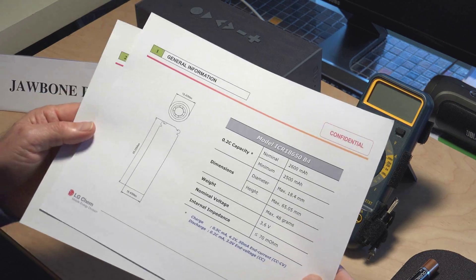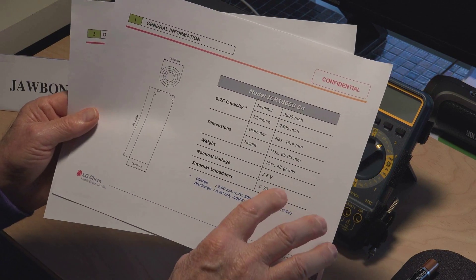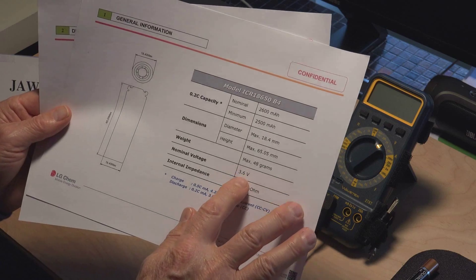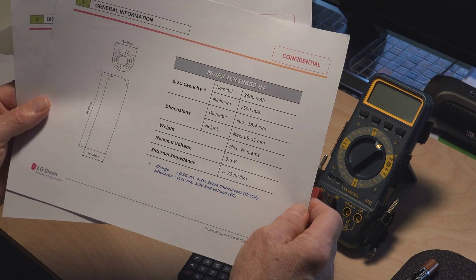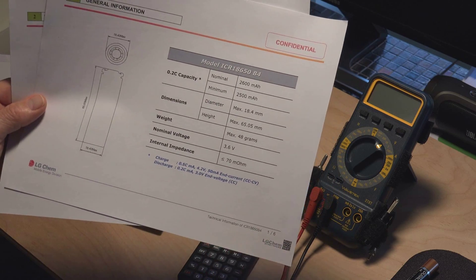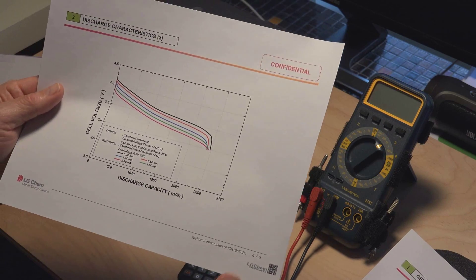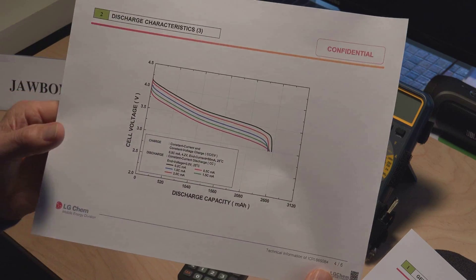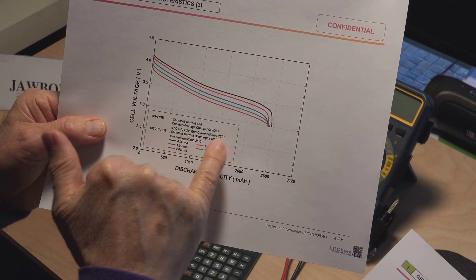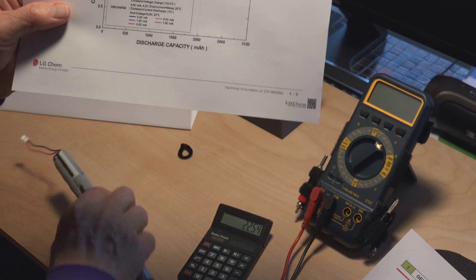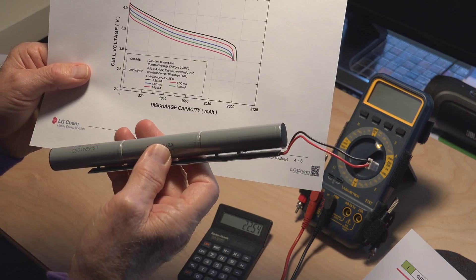The cell information shows that the nominal voltage should be 3.6 volts. It has a nominal current capacity of 2600 milliamps. The discharge characteristics show the end voltage is 3 volts and we're measuring 2.7 on each one of the cells here. So this is really dead.